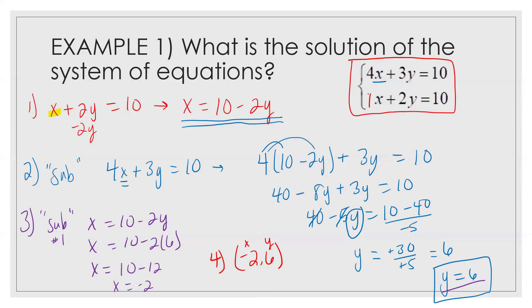Step four — we check. I'm going to plug negative 2 in for x and 6 in for y. What is 4 times negative 2? Negative 8. What is 3 times 6? 18. Negative 8 plus 18 equals 10 — check. Next: negative 2 plus 2 times 6 is 12, and negative 2 plus 12 is 10. We did it right. This is our final solution. Isolate, sub, sub, check.